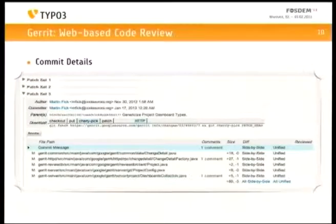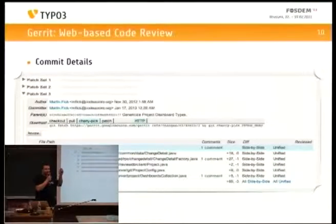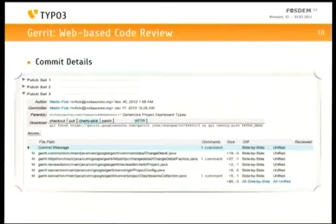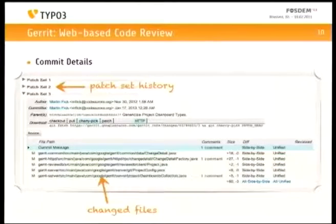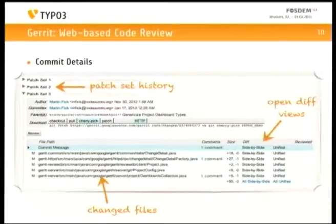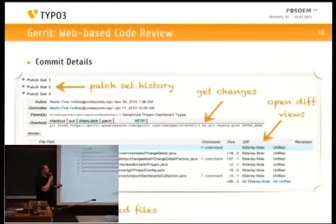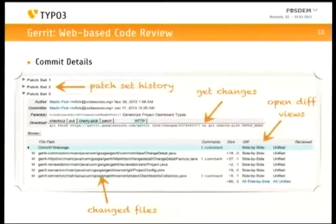Scrolling down a bit leads to more details. You see different patch set revisions — that was the first try, somebody said it's not okay, please fix this and that, and the author uploaded a new version. Finally there's version three. You can see the full patch set history and the current patch set. There's also info on which files were changed and how much. You can directly open a diff view in your browser to see the changes introduced by this patch. And nicely, you just copy that one line into your shell and it will automatically fetch all the changes from Gerrit and apply them to your local working tree, so you can directly start testing or building.